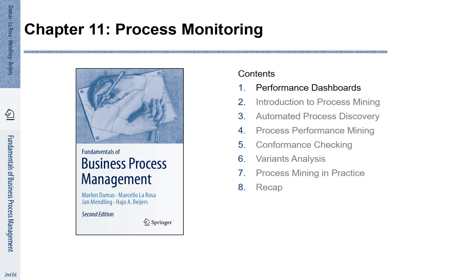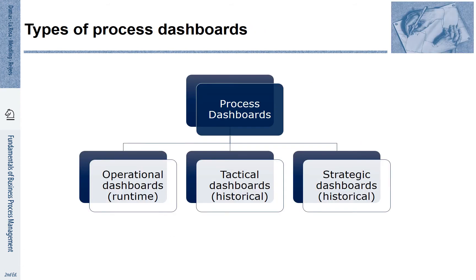Chapter 11, Section 1: Performance Dashboards. In general, we can distinguish three categories of process dashboards. The first category is concerned with operational dashboards, which look at cases as they unfold. Tactical dashboards are concerned with historic information of already closed cases. And strategic dashboards provide aggregations. We will discuss this in more detail.